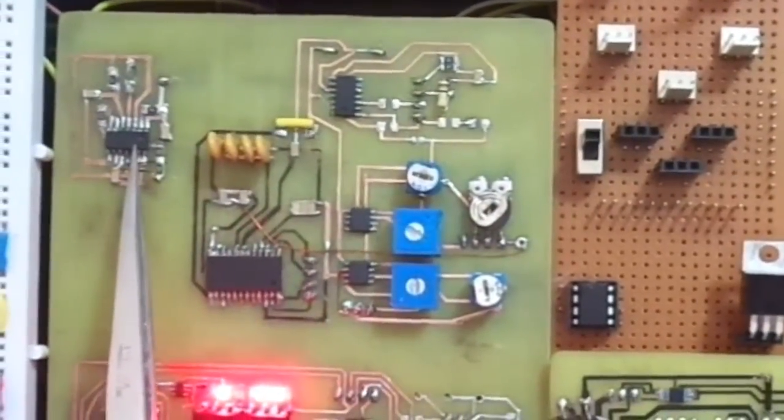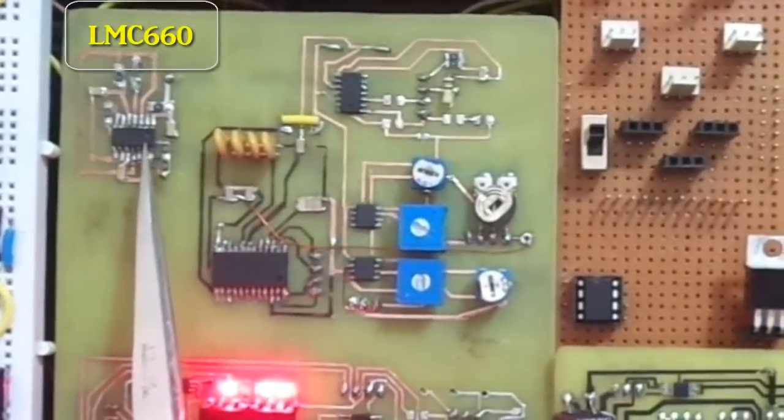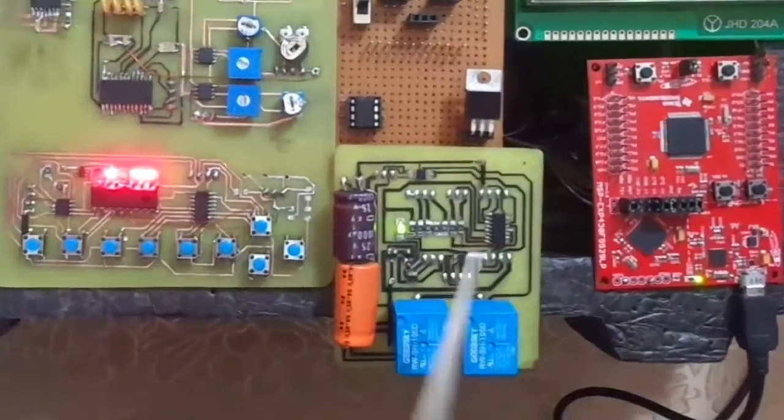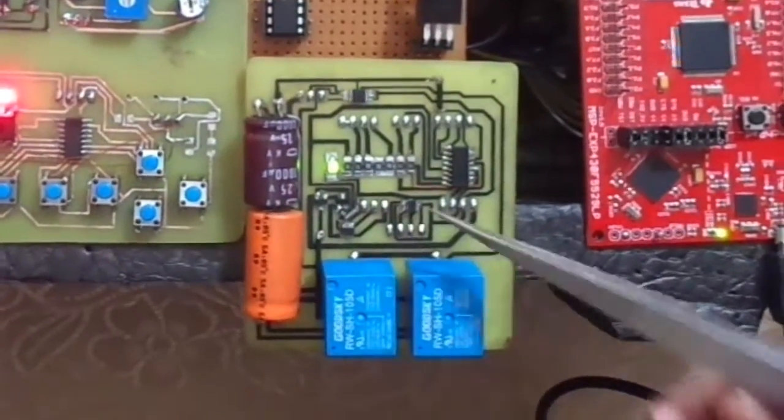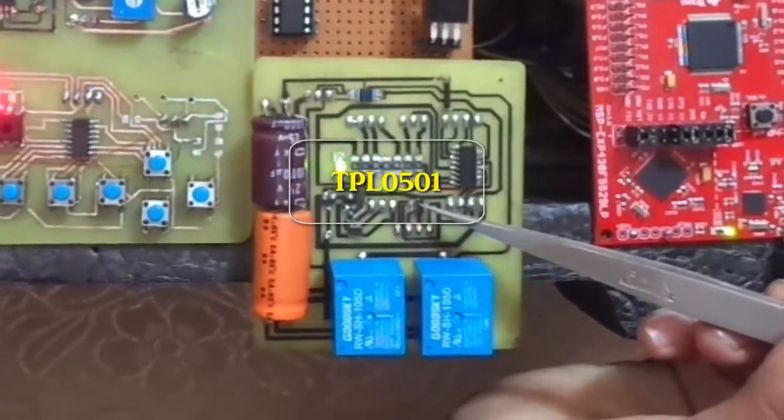Sine wave generator is a phase shift oscillator made using Texas Instruments LM386. Ramp generator unit consists of Texas Instruments TPL0501 digital potentiometer,